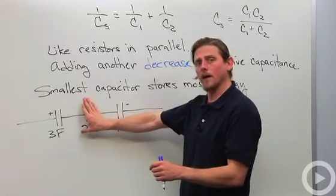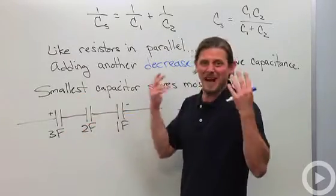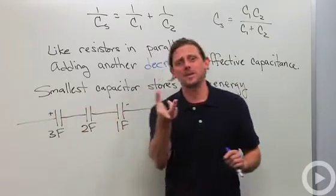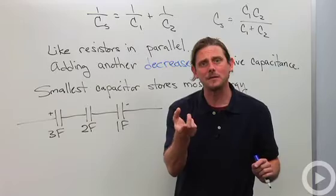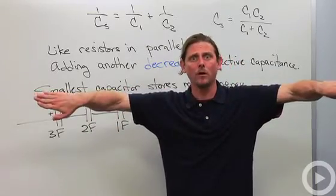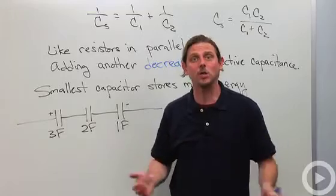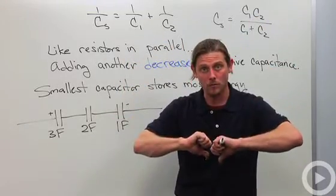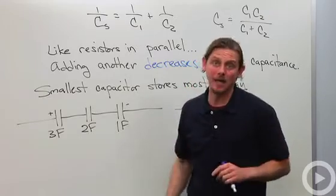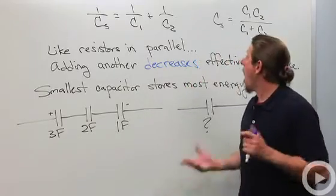And you can just think about this in terms of if I had these guys, and I didn't have the one in the middle, then you can kind of think, well, geez, the plus and the minus are closer together. So it's like reducing that distance. So then when I add in the capacitance in the middle, it's like pushing it apart. So that means that the capacitance goes down, not up. And that's something very counterintuitive that it's easy to get messed up with.